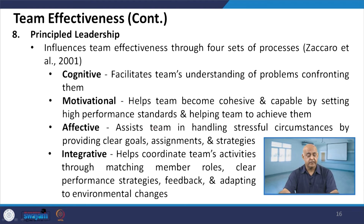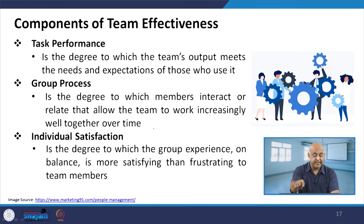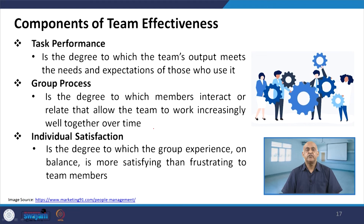Whenever we talk about principled leadership, there is a cognitive understanding of problems. Influence on team effectiveness comes through four sets of processes as per Zaccaro et al. (2001): cognitive — understanding problems confronting them; motivational — keeping high performance standards; affective — handling stressful circumstances by providing clear goals, assignments and strategies; and integrative — coordinating team activities through matching member roles, clear performance strategies, feedback and interpreting environmental changes. Task performance, group process and individual satisfaction are very important. Teams' outputs must meet the needs and expectations of those who use them. Group process determines how members interact to allow the team to work increasingly well together over time. Individual satisfaction means the group experience is on balance more satisfying than frustrating for team members.